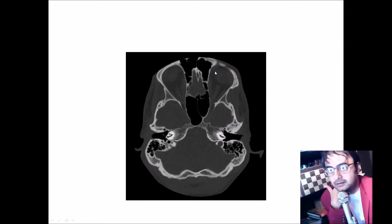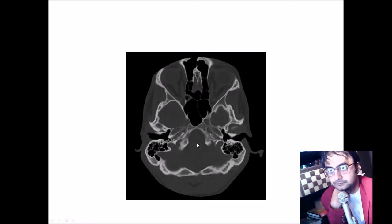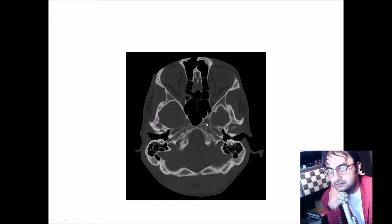Coming to the next slide — again at the level of the orbit, these are the sphenoid processes that project inwards. In the midline there is again the crista galli, through which the olfactory fibers pass. This is again the middle cranial fossa and part of the temporal bone. Here again you see the cochlea, the external ear, the mastoid air cells. Here are the sphenoid sinuses, and the clivus starts here, running up to the foramen magnum. On both sides of the sphenoid sinus, on the posterior lateral aspect, is the carotid groove and the carotid canal.